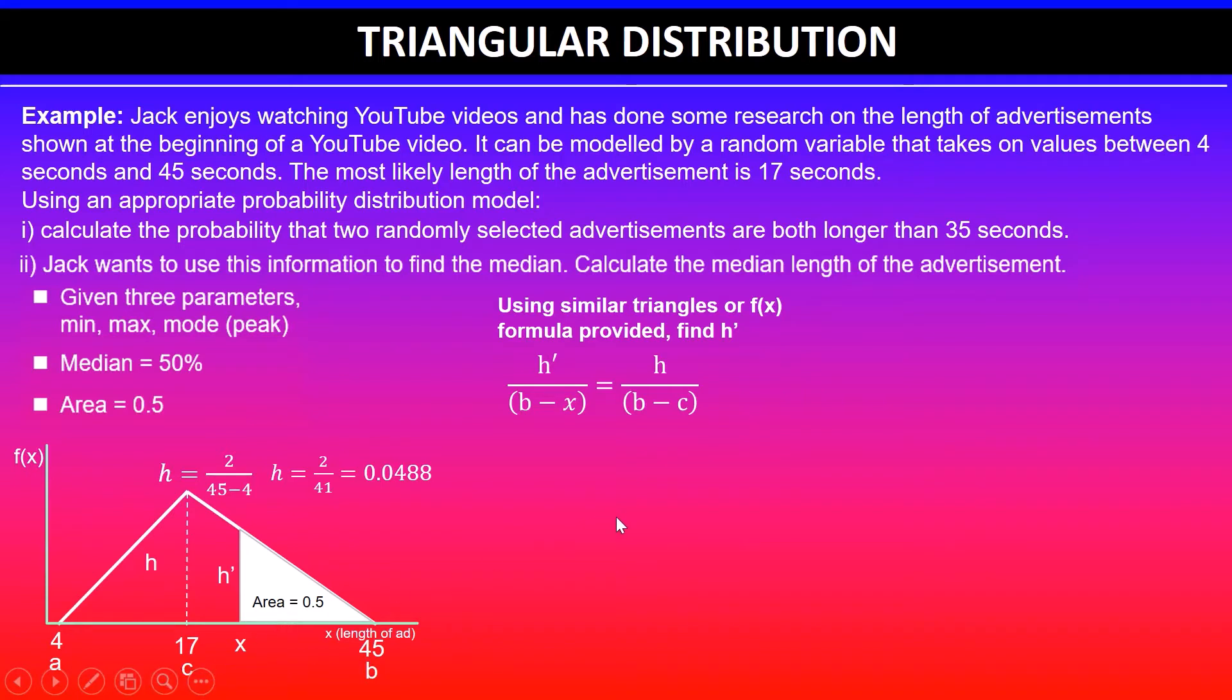Once I've got that information I can start substituting. So h' is equal to 45 minus x, and this x is unknown. This x will be our median value. It's equal to h, which is the height of the bigger triangle, and we have already calculated the value...